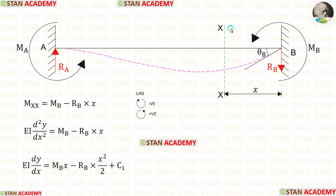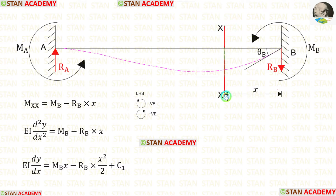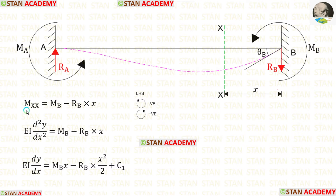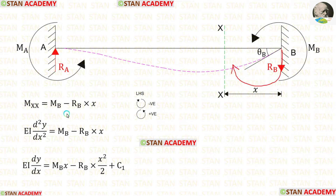In this beam, let us make a section XX at a distance of X from point B. At this section, we are going to find the moment MXX, taking moments from point B, moving towards the left-hand side. Clockwise will be negative and anti-clockwise will be positive. MB is acting anti-clockwise, so it will be positive. RB is acting clockwise, so it will be negative, and the distance is X.